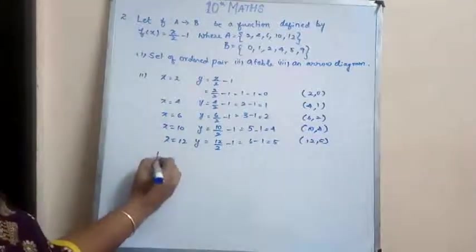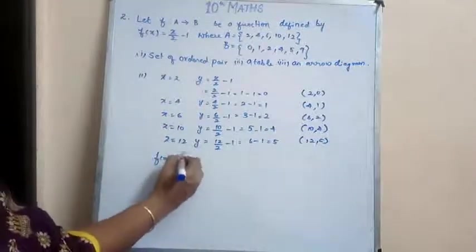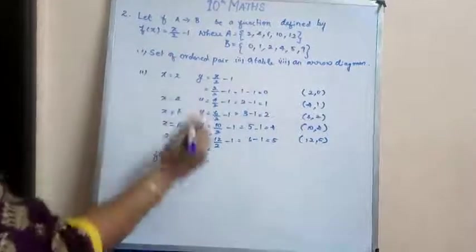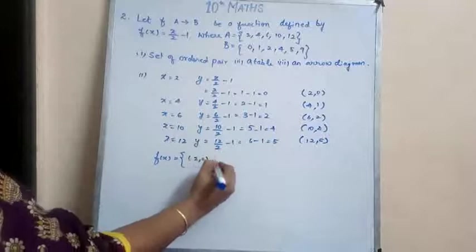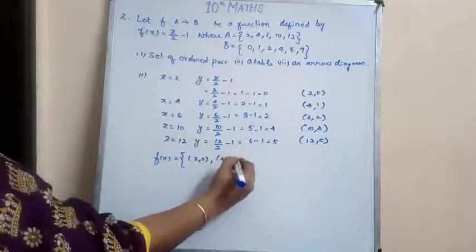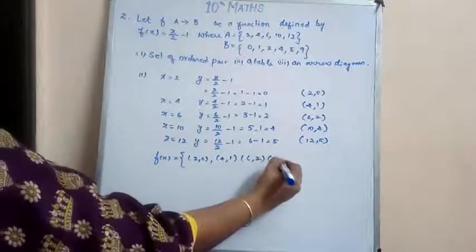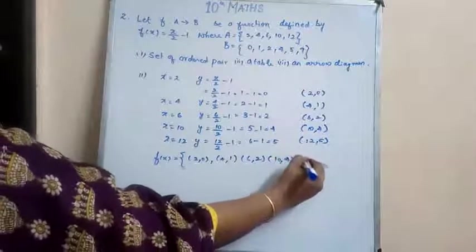So f(x) is equal to, you have to represent in terms of a set of ordered pairs. So (2, 0), (4, 1), (6, 2), (10, 4), and (12, 5).